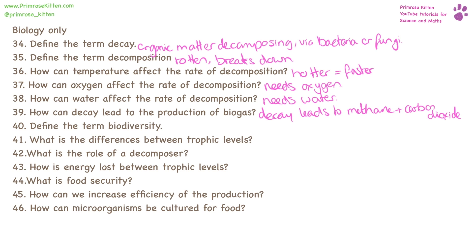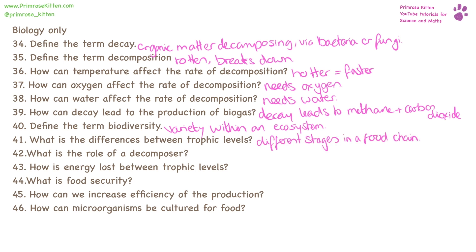Biodiversity is a variety of species in an ecosystem. Trophic levels are different stages in a food chain. A decomposer's role is to break down any organic material. In a food chain between trophic levels, energy is going to be lost from movement, respiration, and through waste — so faeces and urine.